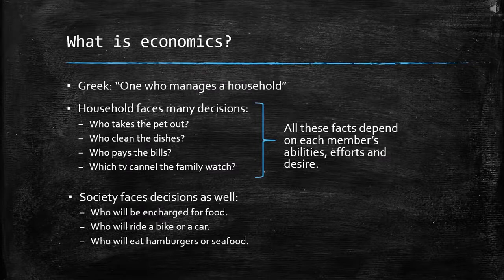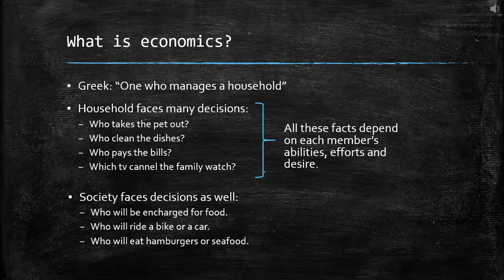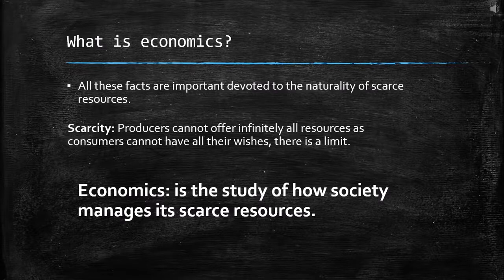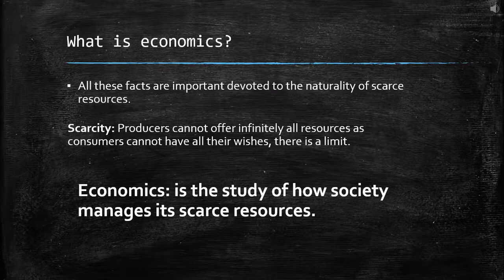For example: who will be responsible for food, who will ride a bike or a car, or who will eat hamburgers or seafood. These are the decisions we have in interactions inside a household. All these facts are important, devoted to the nature of scarce resources. What is scarcity? Producers cannot offer infinitely all resources, and consumers cannot have all their wishes — there is a limit from both parts. So we can define economics as the study of how society manages its scarce resources.